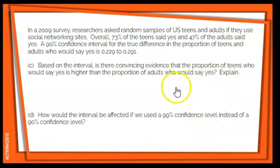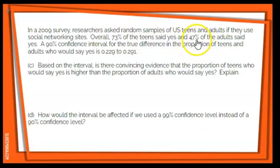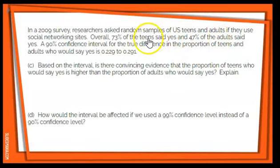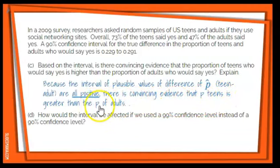Same question, part C: based on the interval, is there convincing evidence that the proportion of teens who would say yes is higher than the proportion of adults? If I take teens minus adults, a positive result means teens are higher; a negative result means adults are higher. Because the interval of plausible values for the difference — teen minus adult — are all positive, there is convincing evidence that the proportion of teens is greater than the proportion of adults.